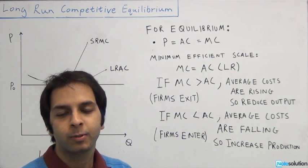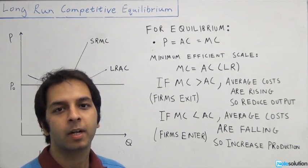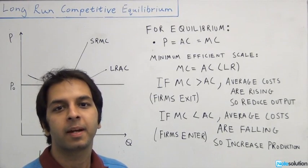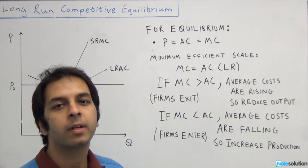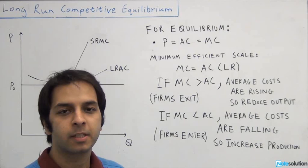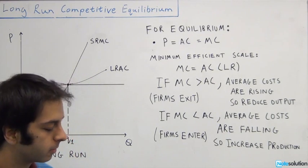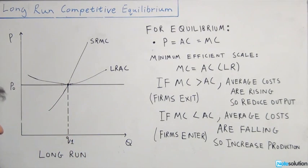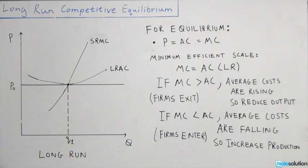Hi, this is Nafal from NoteSolution. We're going to be talking about long run competitive equilibrium today and we're going to be looking at a medium difficulty question just to clarify our concepts. The question is about efficiency in production and it says: in the long run equilibrium of a market with free entry and exit, if all firms have the same cost structure...